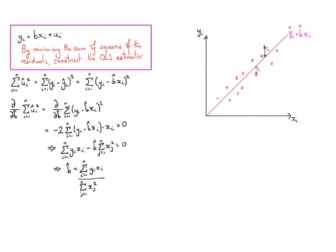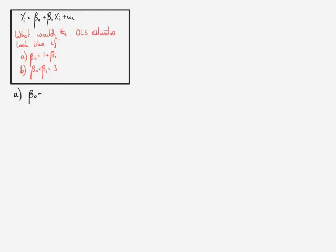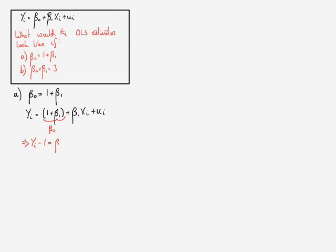We're going to use this result to analyze how we might estimate other relationships where we impose constraints. In the exercise, we're trying to impose that the intercept β₀ is equal to 1 plus β₁. If we substitute this into the relationship we're trying to estimate — replacing β₀ by 1 plus β₁ — we get yᵢ = 1 + β₁ + β₁xᵢ + uᵢ. Taking the 1 over to the left-hand side, we get yᵢ minus 1 = β₁(1 + xᵢ) + uᵢ.